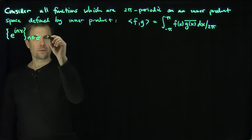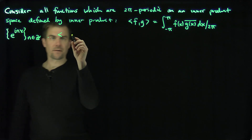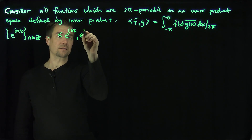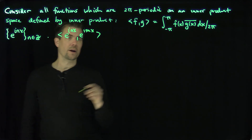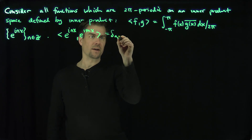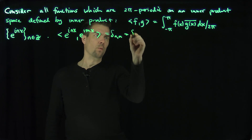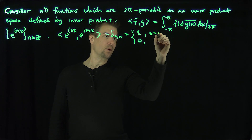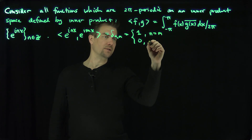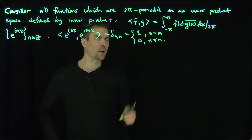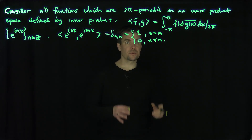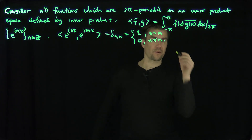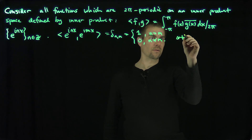So it follows that the inner product of e^(inx) and e^(imx) gives us δ_{nm}, the Kronecker delta, which is 1 if n equals m, and 0 if n is not equal to m. So that's one example of an orthonormal family.